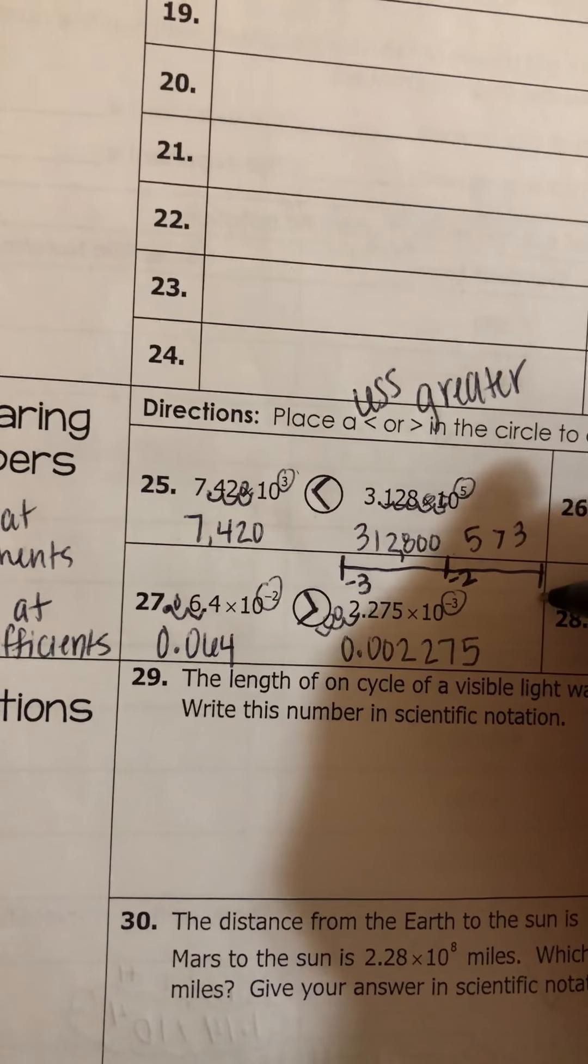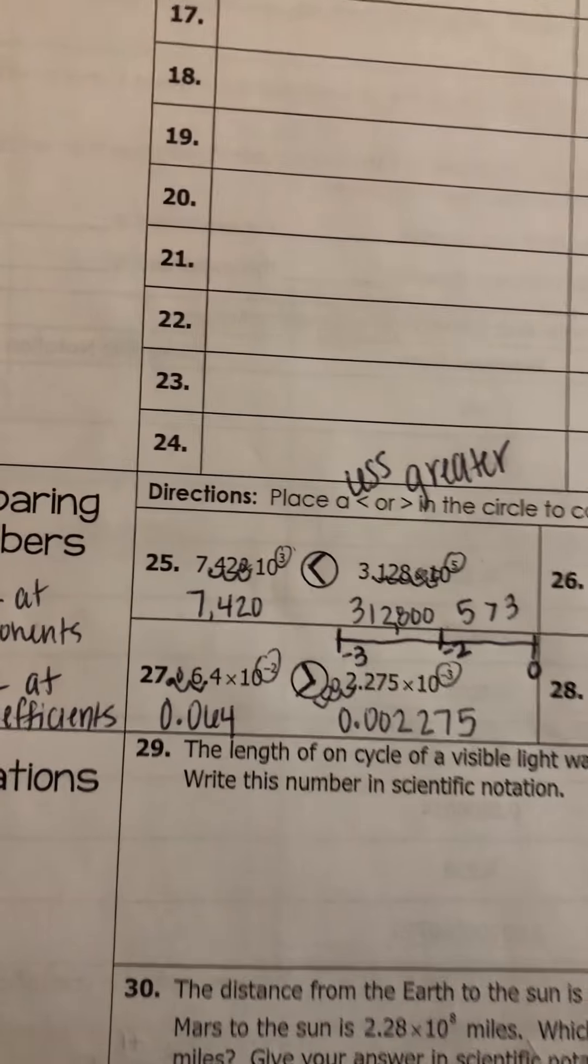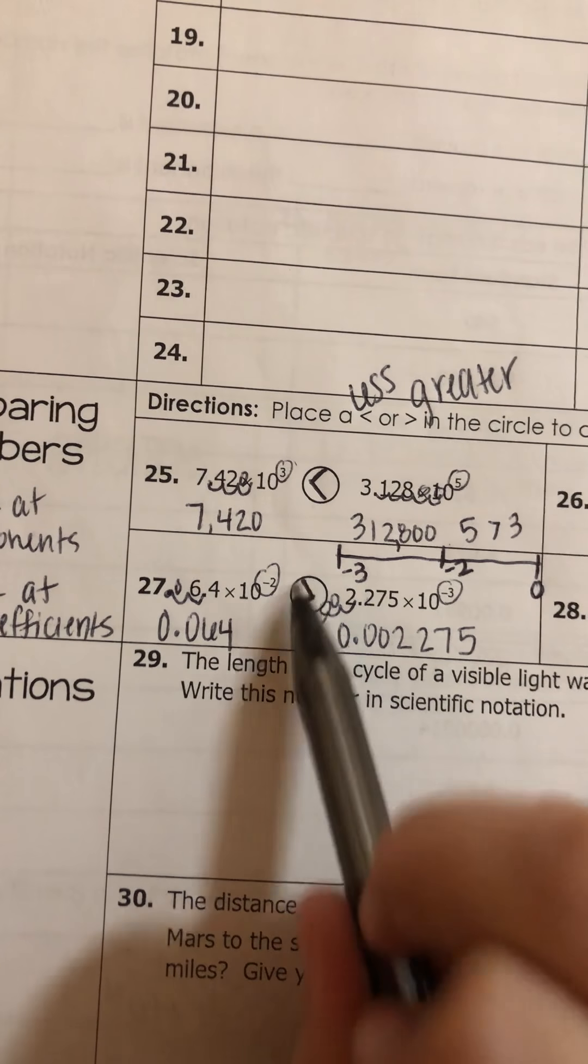Because remember, negative 2 is closer to 0, which is closer to the positive side of the number line. So the one with negative 2 is greater.